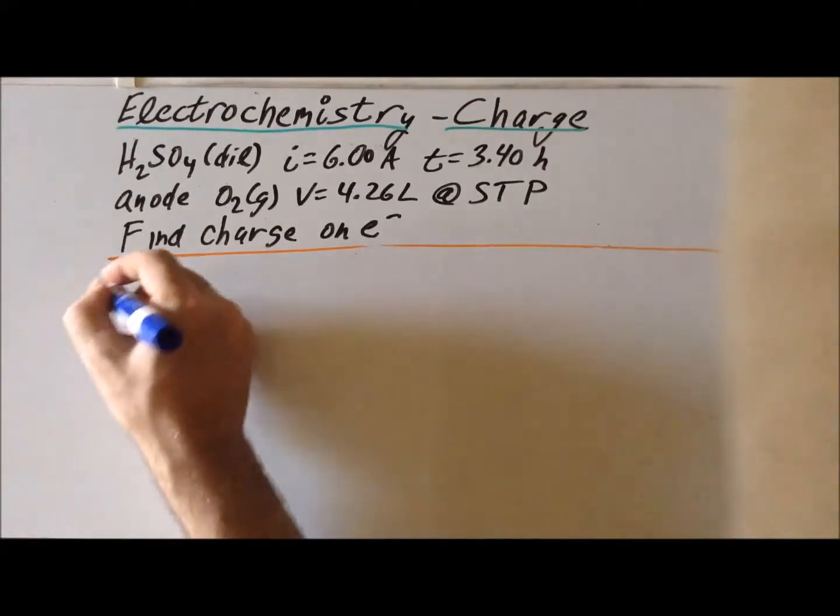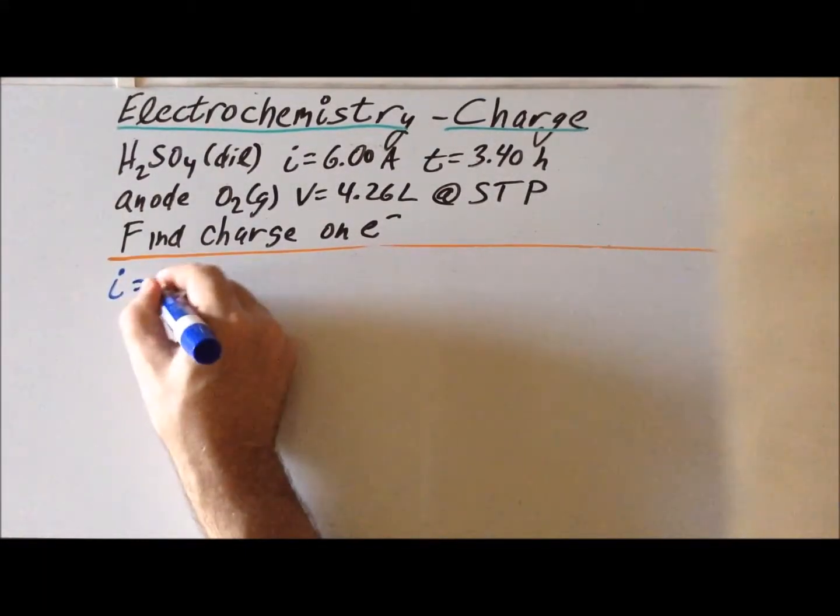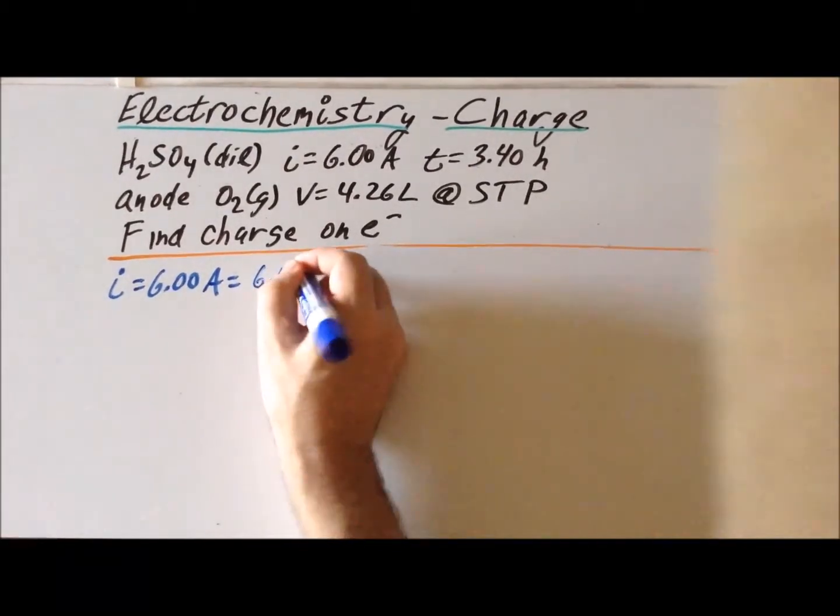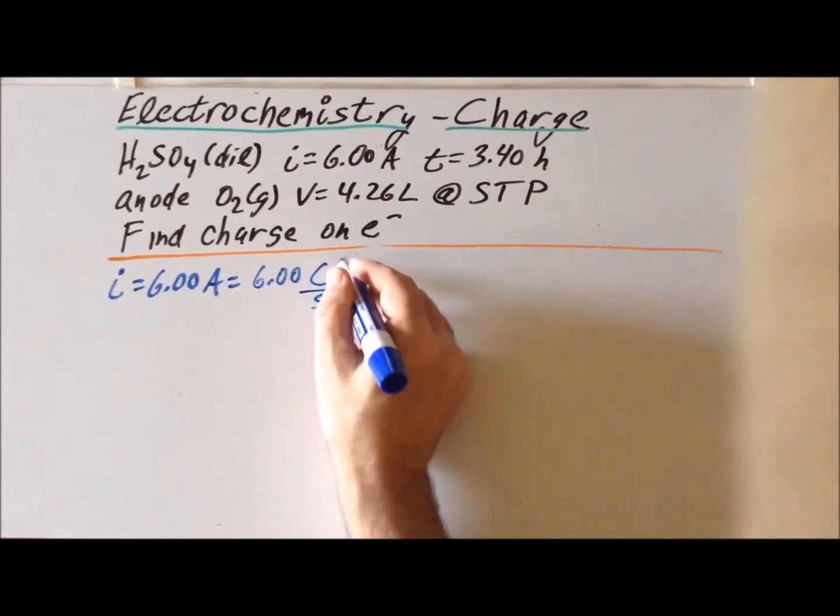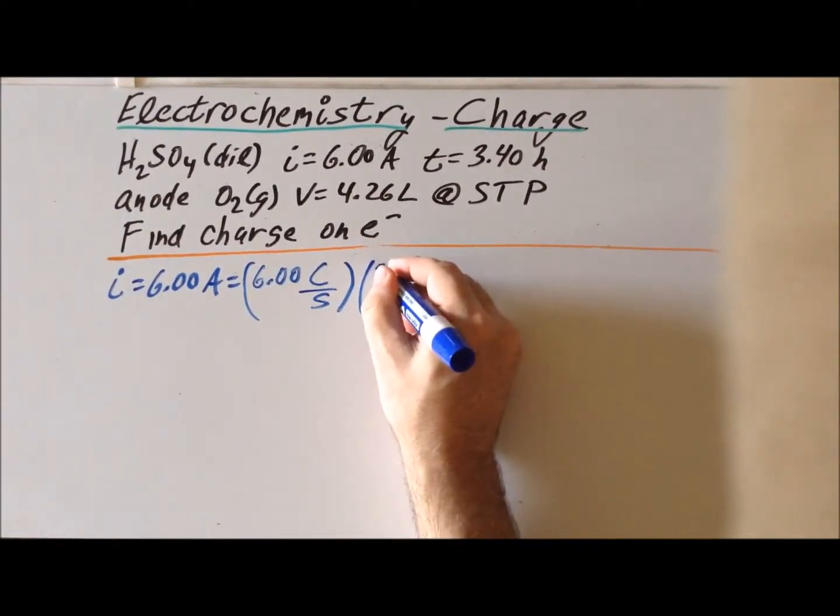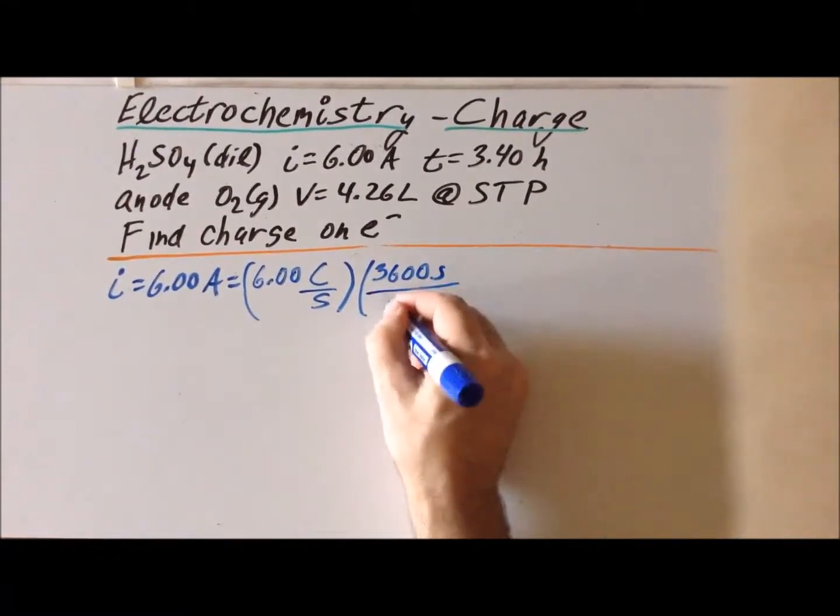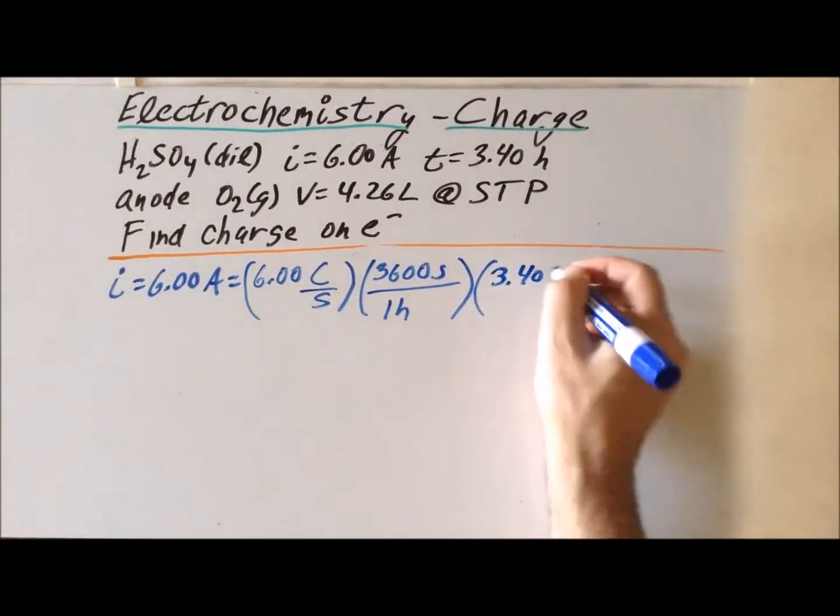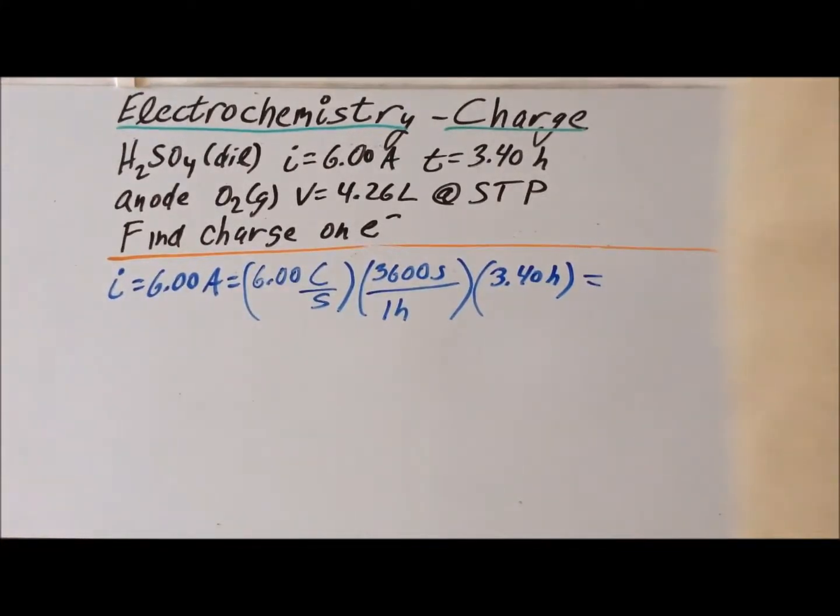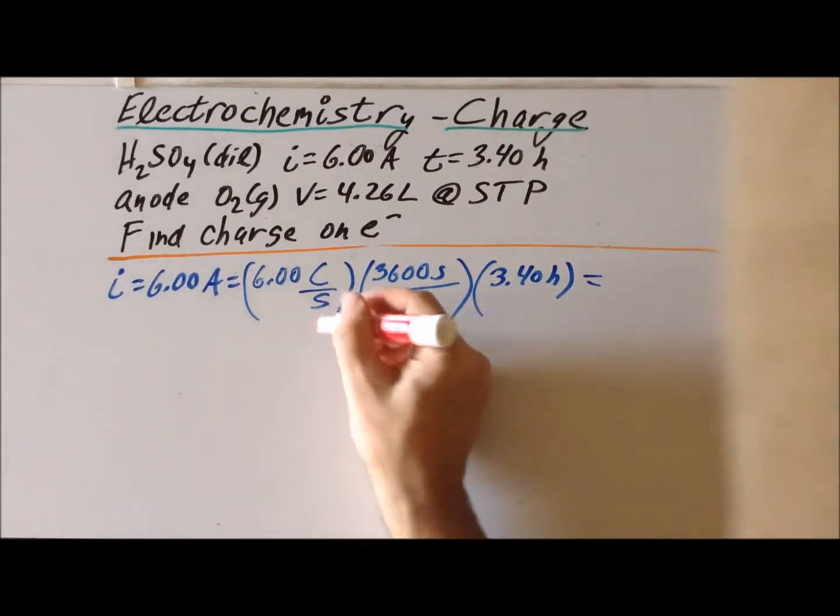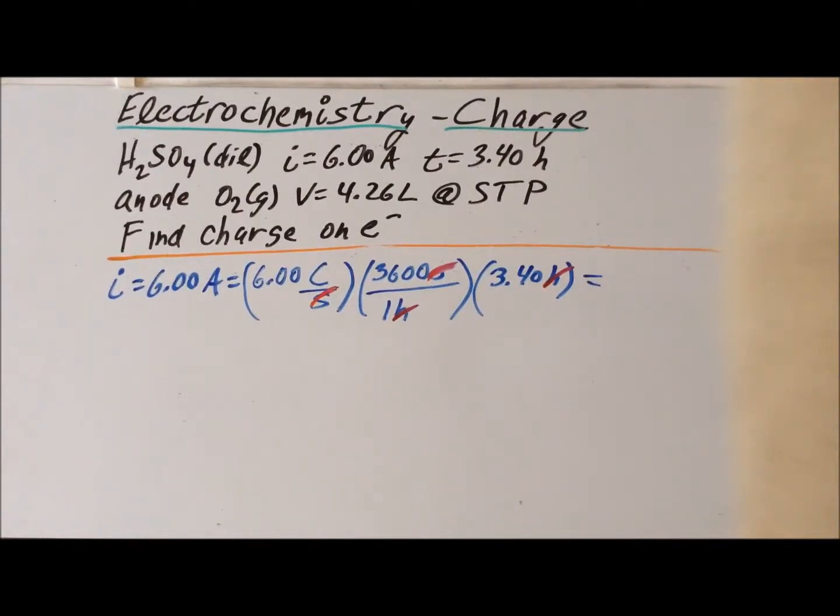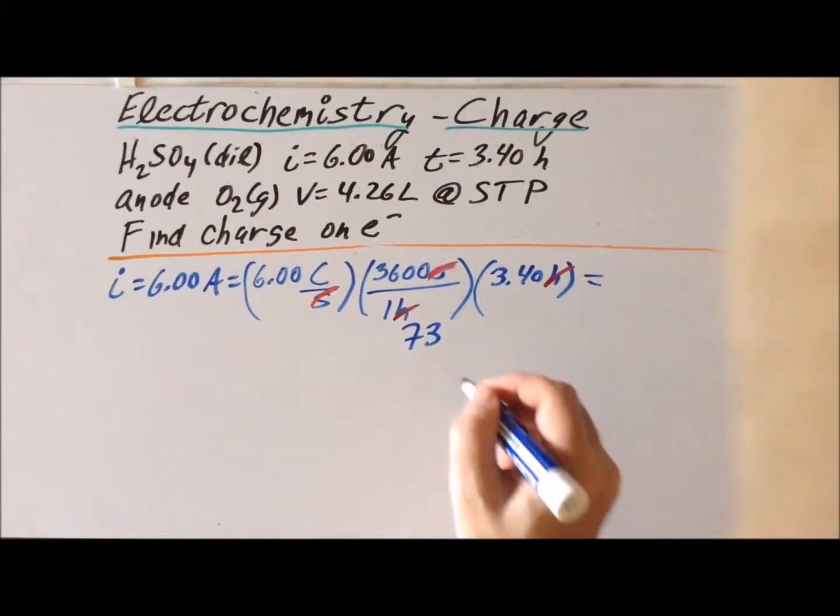Next, we use the fact that the current used was 6.00 amperes. And recall that one ampere is one coulomb per second. So this is 6.00 coulombs per second. And we know that there are 3,600 seconds in one hour. And that the current ran for a time of 3.40 hours. So by working through here, we notice that the units of seconds cancel, the units of hours cancel, and we're left with the total charge involved in coulombs, which works out to be 73,440 coulombs.